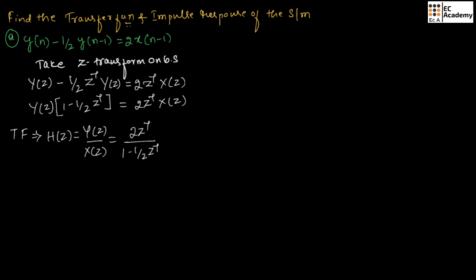If we simplify this, we will get 2 divided by (z minus 1/2). So this is the transfer function. Therefore, we got H(z) = 2 / (z - 1/2).